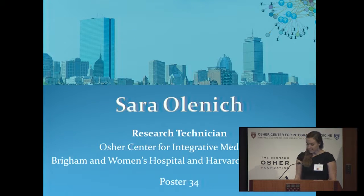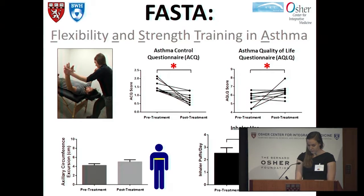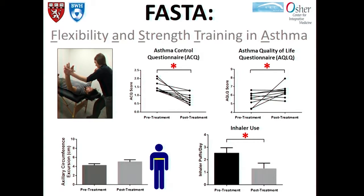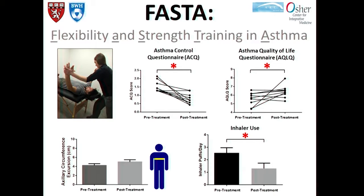Hi, my name is Sarah Olenich, and the study I'll be presenting is FASTA—Flexibility and Strength Training in Asthma. The standard of care for asthma focuses on medications, but much less is known about musculoskeletal factors that may contribute to asthma symptoms. In this pilot study of 10 subjects, we used a body-based treatment to address movement restrictions of the chest and shoulders as an adjunct to pharmacotherapy. Questionnaires, spirometry, range of motion, and ultrasound were used to measure changes. We saw statistically and clinically significant decreases in the ACQ—the Asthma Control Questionnaire—and the AQLQ—Asthma Quality of Life Questionnaire—as well as decreased inhaler use and increased chest circumference. Please come see me at Poster 35.